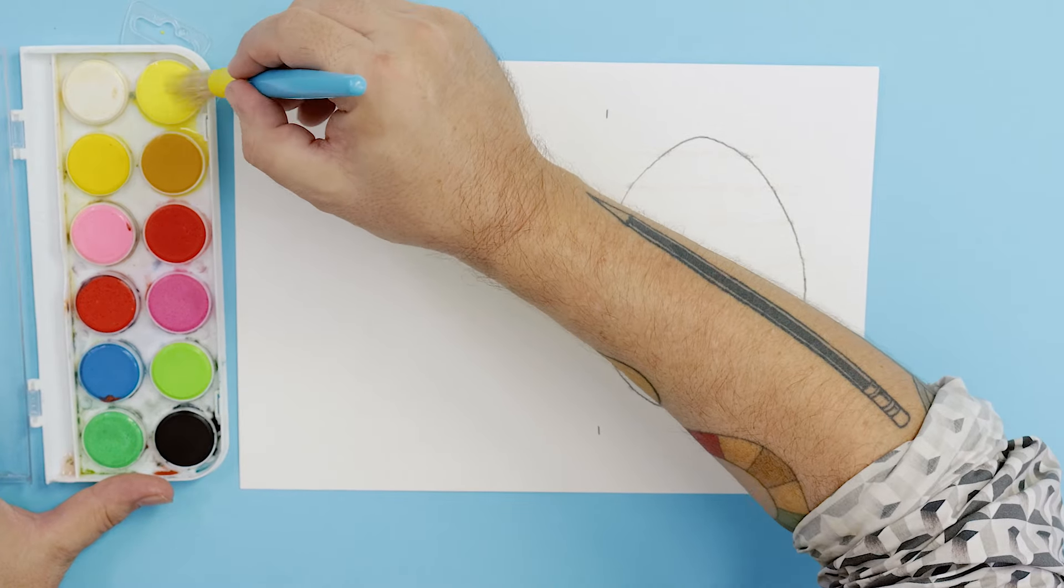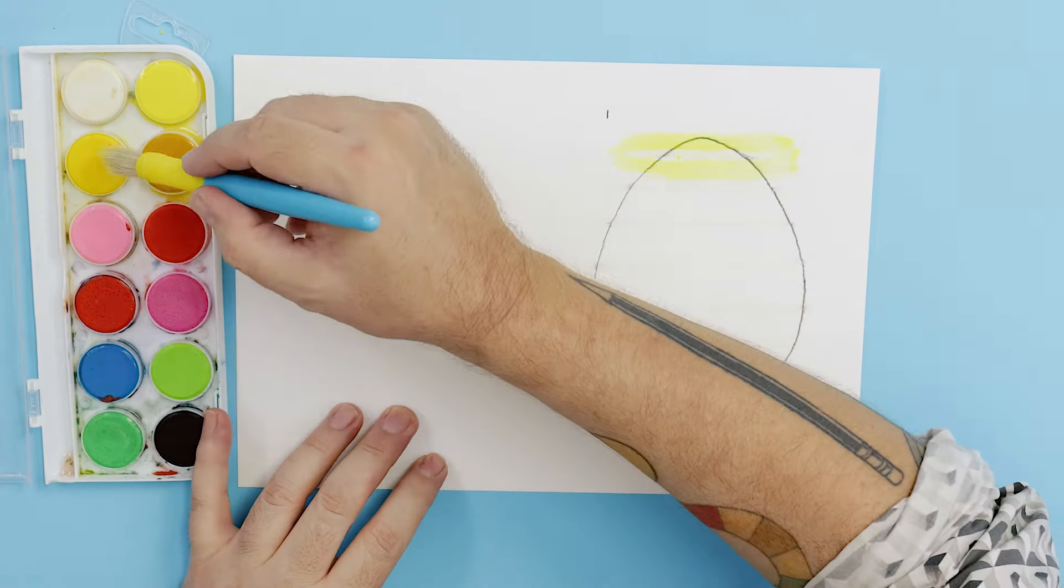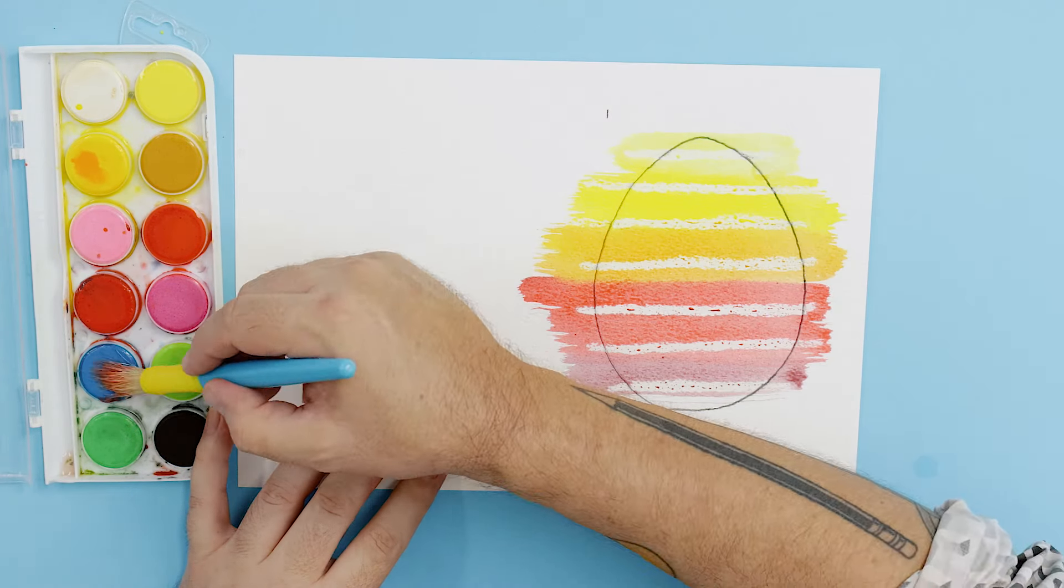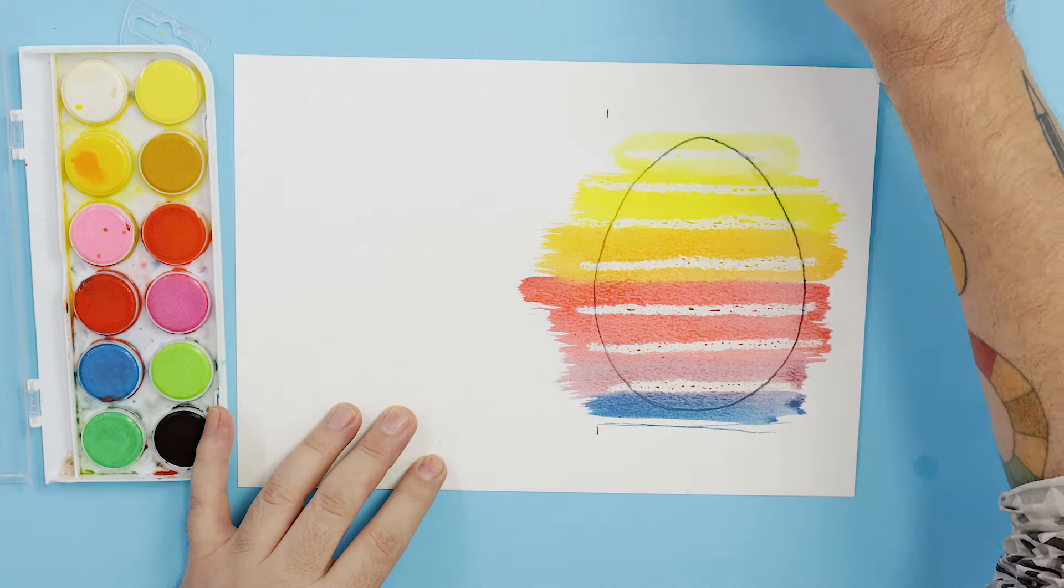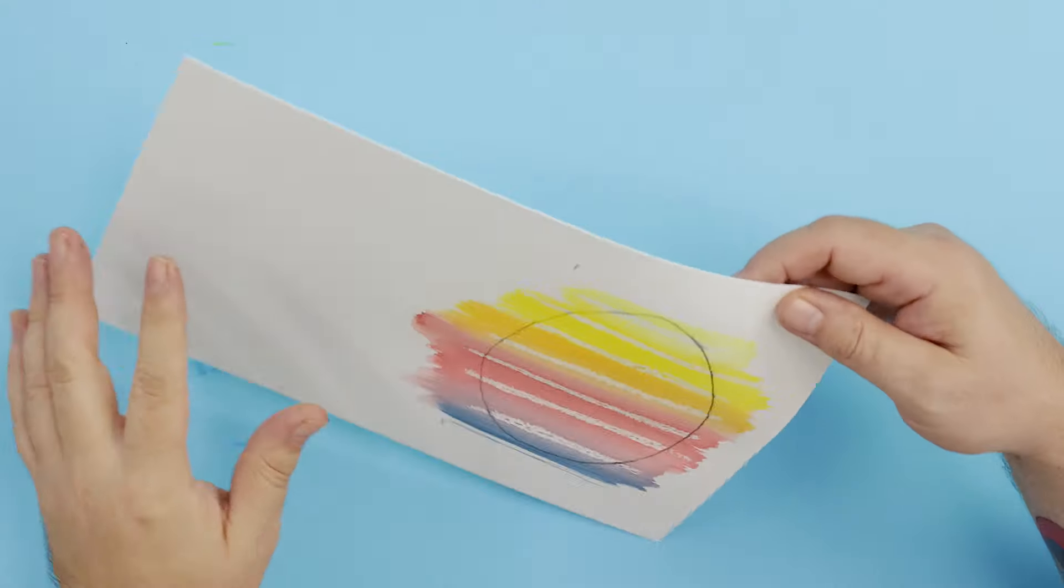We then lay yellow across the top of the egg, and as we move down the egg we lay a touch of red into the yellow creating an orange. Then move to red and then to blue. You will notice that where we laid the crayon the paint does not adhere. It's like magic.